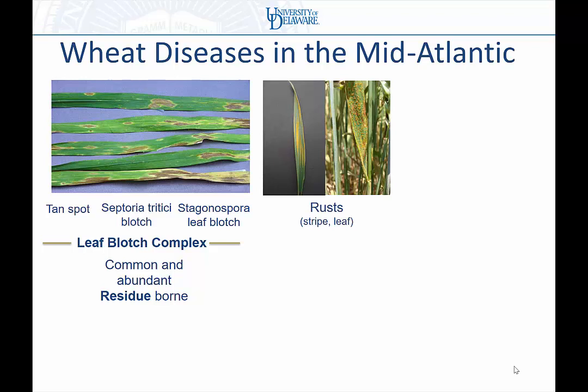Other foliar diseases include the rusts, which are sporadic because we need new spores from the southern U.S. every year to blow up and provide new infections. We're seeing a little more stripe rust — those yellow colored lines on the leaves. It's a cool season disease compared to leaf rust, which shows up a bit later. These pathogens have a very short spore-to-spore generation time, so they can blow up very quickly, especially with a susceptible variety under the right environmental conditions.